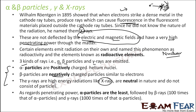Regarding penetrating power: alpha particles have the least penetrating power because they are heavy — being protons (helium nuclei). Beta particles are lighter than protons, so they have higher penetrating power. Gamma rays are totally neutral, so gamma has the highest penetrating power.